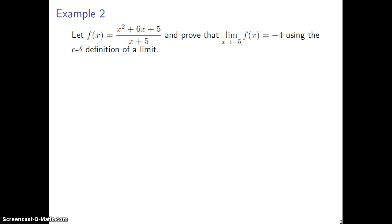So here you have this rational function f, and you have to prove that the limit of that function as x approaches negative 5 is equal to negative 4 using the epsilon-delta definition of a limit.